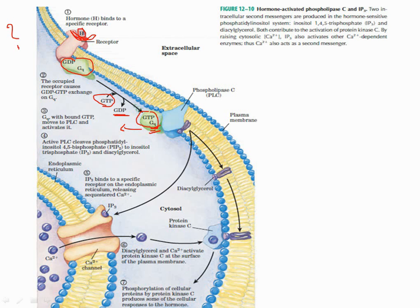subunit activates phospholipase C. This phospholipase C cleaves PIP2 (phosphatidylinositol 4,5-bisphosphate) into IP3 (inositol trisphosphate) and DAG (diacylglycerol). Then IP3 binds to the receptor on